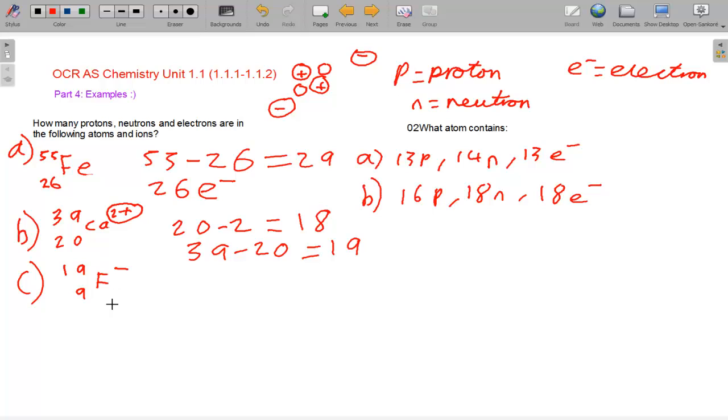For fluorine minus now, we have 10 neutrons and 9 protons. And since an electron has been added, we can see this by the minus charge, we will have 10 electrons.